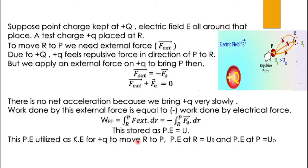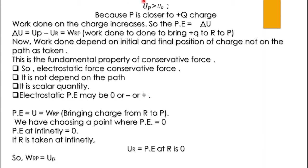For plus q to move from R to P — if potential energy at R is U_R and potential energy at P is U_P — then U_P is greater than U_R, because point P is closer to Q. So work done on the charge increases. Therefore, delta U equals U_P minus U_R, and that equals the work done in bringing the charge from R to P.